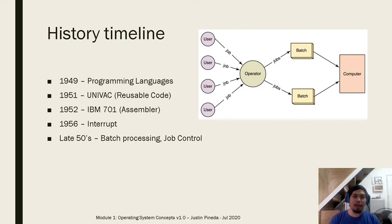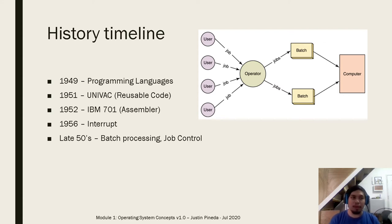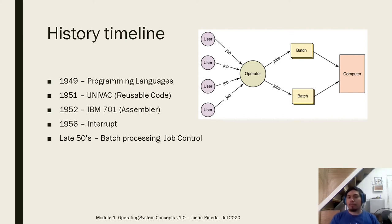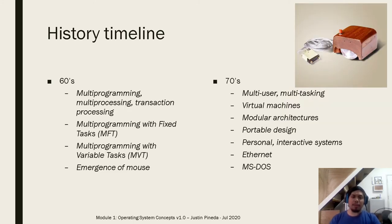During the late 1940s, programming languages emerged. In 1951 we have reusable code with UNIVAC, an assembler in 1952. In 1956, interrupts were introduced. During the late 50s, we have batch processing already in job control. I'm just laying out the timeline — the details of what these are, like interrupts and batch processing, will be discussed further. We're pointing out that as early as the 1940s, the goal for the creation of the operating system, although it was not named yet, was already existing.